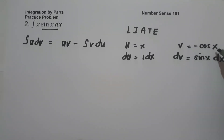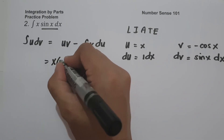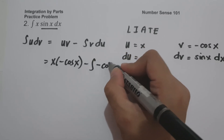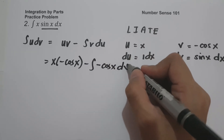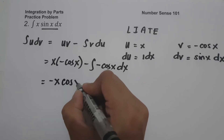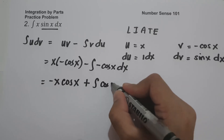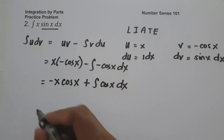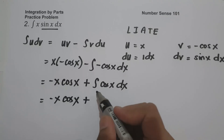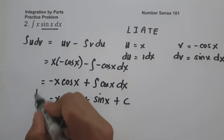So we have u = x, v = negative cosine x, giving us x·(−cos x) minus the antiderivative of negative cosine x dx. Simplifying: negative x cosine x, and negative times negative is positive, so plus the antiderivative of cosine x dx, which is sine x plus c. And this will be our answer.